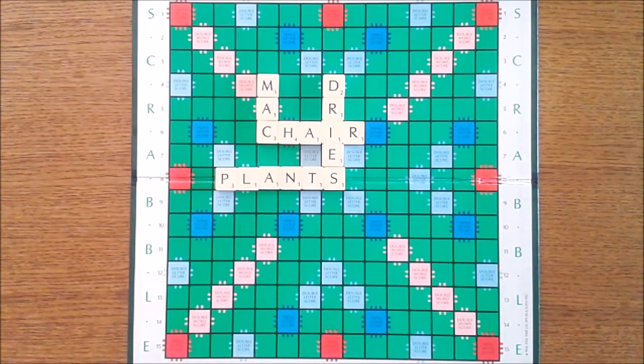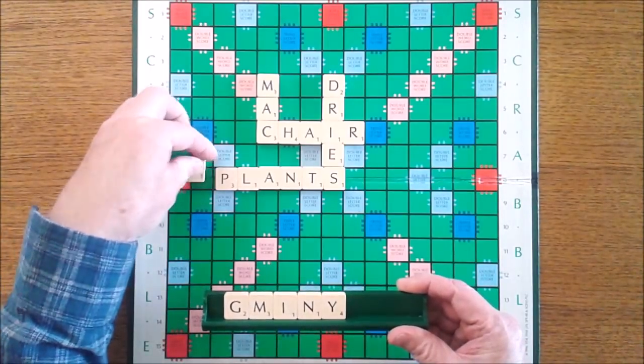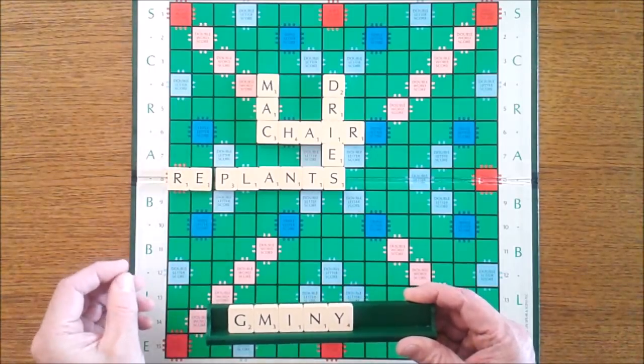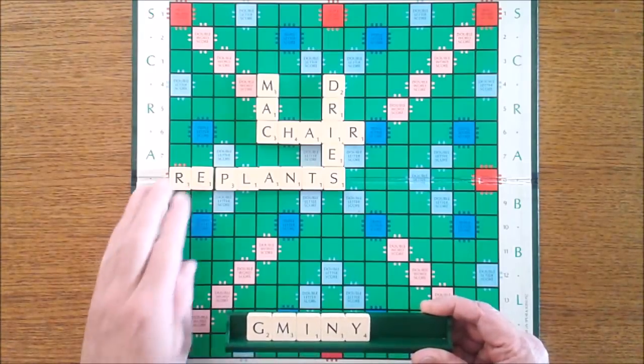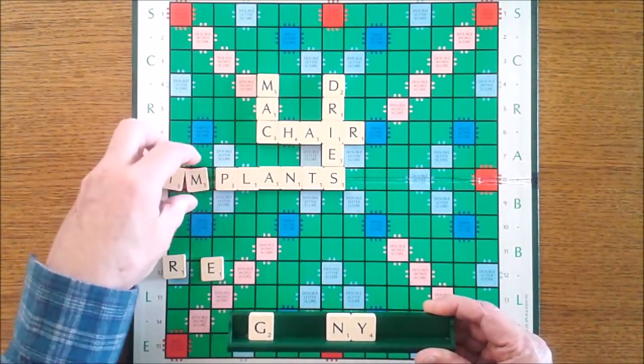Let's have a look at our letters. Well, you can have replants. R-E are good letters to have. They provide a good prefix to a lot of words. That would score 30. But you can do even better than that. How about implants? That actually scores more: 36.